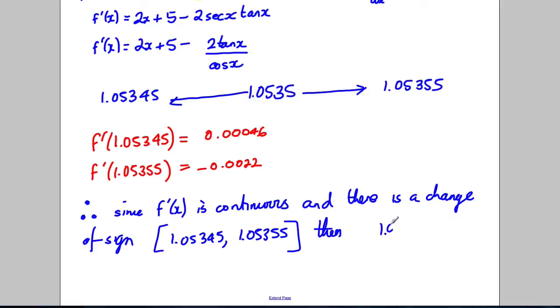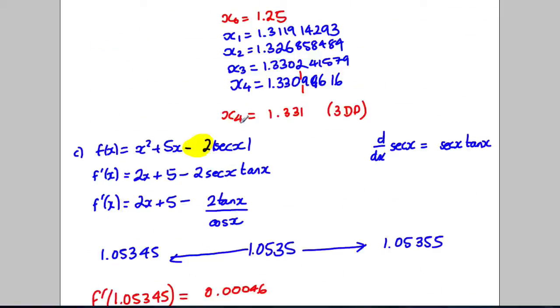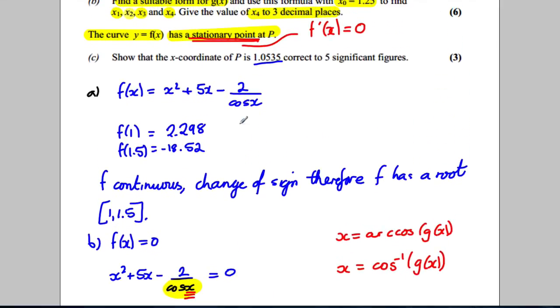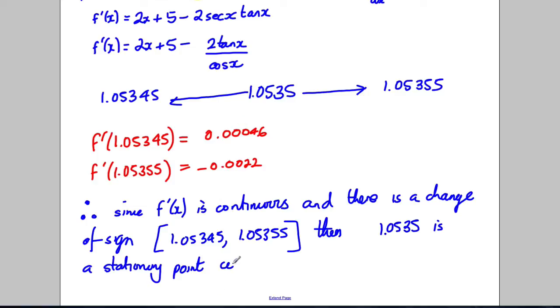Then 1.0535 is a stationary point. And what was it? It was correct to 5 significant figures. Correct to 5 significant figures. And we're done.